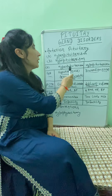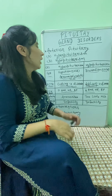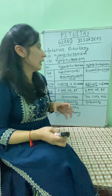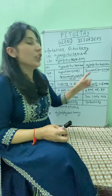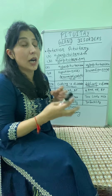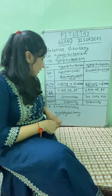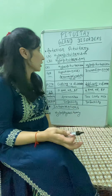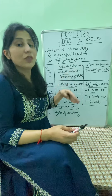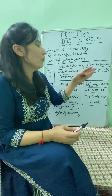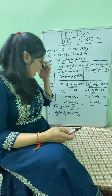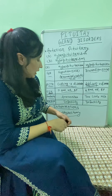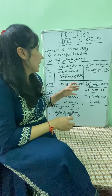Regarding intervention: if there is hyperpituitarism, we need to go for surgery, which involves removal of the pituitary gland. In hypopituitarism, we need to go for hormone replacement. So in hyperpituitarism, surgery is indicated, and in hypopituitarism, hormone replacement is the treatment.